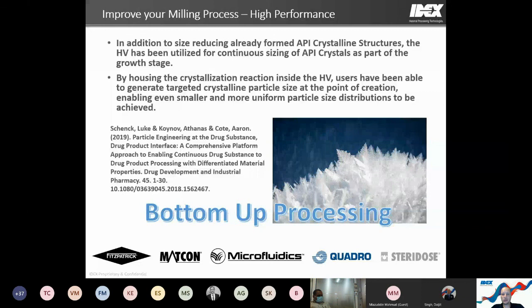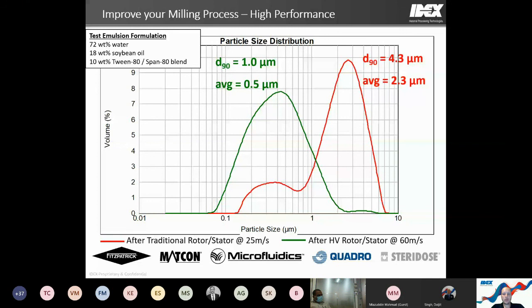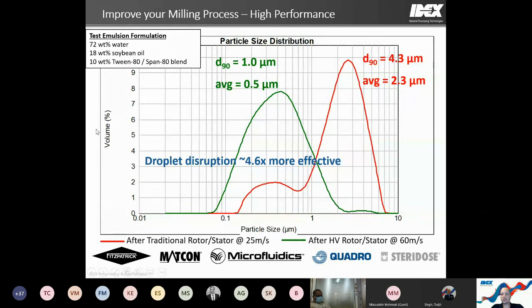The HV is also an effective unit for emulsion performance. Testing at 60 meters per second — not even the full capability — showed almost a five-times reduction in average droplet size relative to a 25 meters per second unit. With an 18% soybean oil emulsion, we're still getting around 0.5 micron on average with a more uniform distribution, all in single pass work. For emulsions, single pass is often what is required.